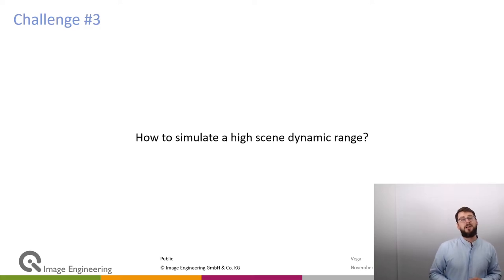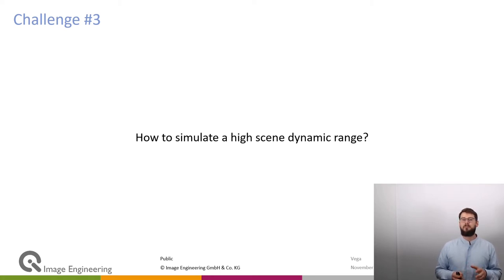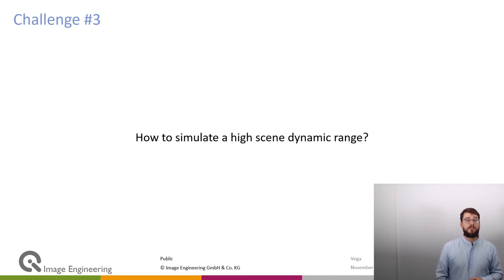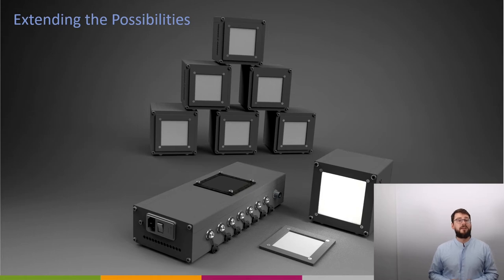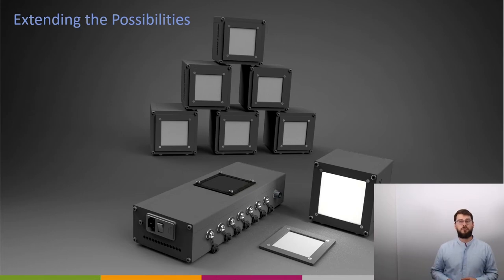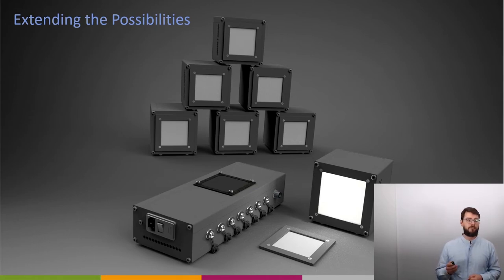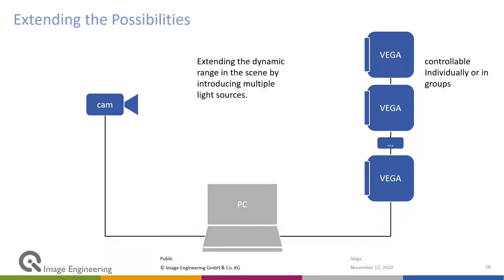How to simulate a high scene dynamic range: for some cameras it is not enough to capture high contrast between two images to test for issues. It is also interesting to see what happens when the camera is introduced to a really high dynamic range scene. What we can do is introduce more light sources. In the case of Vega, the controller supports up to seven light sources, which can all be controlled individually, in small groups, or as one big group. Because they are really small, they can be placed anywhere in the camera's field of view, extending the dynamic range by multiplying the number of light sources.